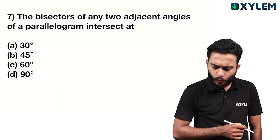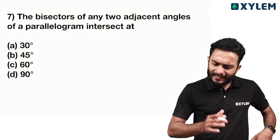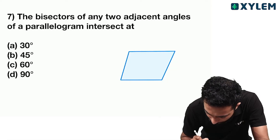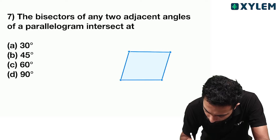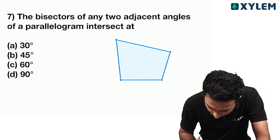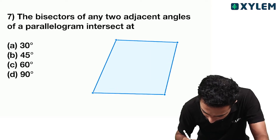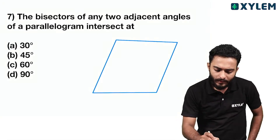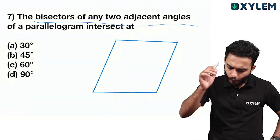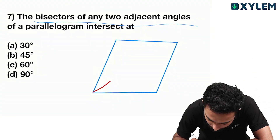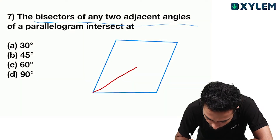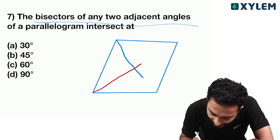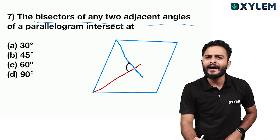The bisectors of any two adjacent angles of a parallelogram intersect. Let's work through this. This parallelogram — what bisectors are. Adjusting angles are bisectors. This angle is bisected. Intersection of the bisectors. The angle is concerned.